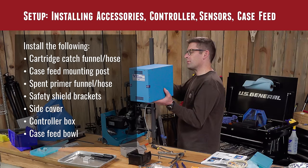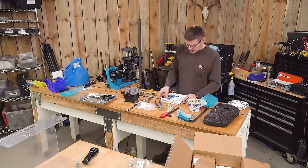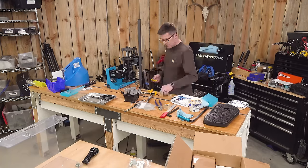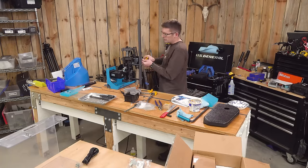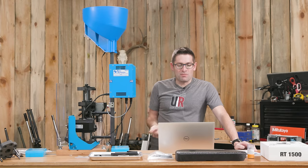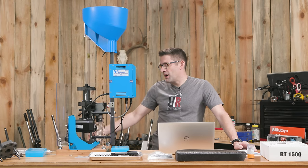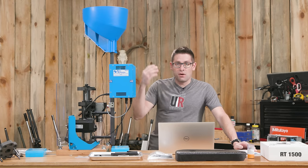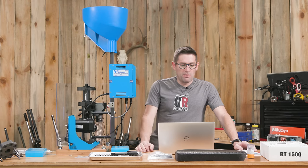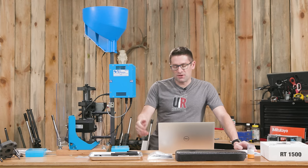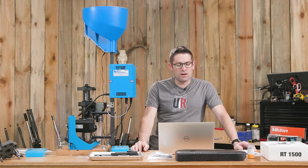The case feed mounting post is a different design. It has the mounting holes for the safety shield brackets and for the controller box. We have the spent primer funnel and hose over on the other side. This is just going to go into a trash can and just pile up. Nothing to collect into a smaller container like would be normal on a regular press.